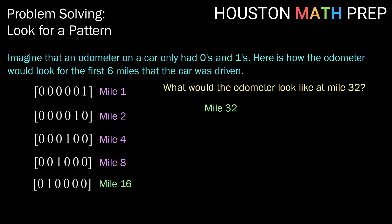So mile 32, noticing that 16 times two is 32, should look like this. We have our one jumping over into the far left space. So there's our answer. What would the odometer look like at mile 32?